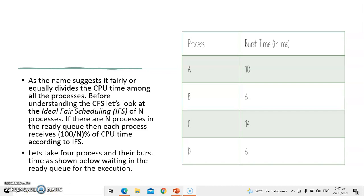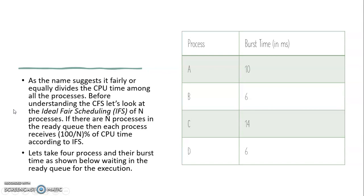As we can see in the diagram, this shows the process and time in milliseconds. As the name suggests, CFS fairly and equally divides the CPU time among all processes. Before understanding CFS, let's look at the ideal fair scheduler: with N processes, if there are N processes in the ready queue, each process receives 100/N percent of the CPU. According to ideal fair scheduling, let's take four processes with their respective times shown, waiting in the ready queue for execution.